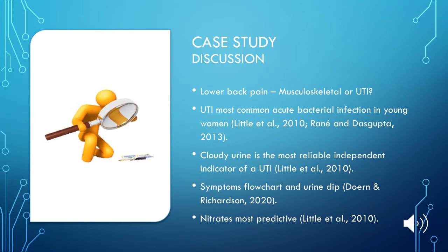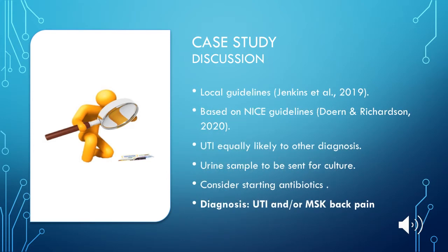The patient's urinalysis showed 3+ leukocytes. When considering urinalysis results, Leta Thal 2010 found that nitrites were the most predictive of a UTI, followed by blood and then leukocytes. Following local guidelines based on NICE guidelines, the patient's diagnosis of UTI was considered equally likely to other diagnoses, and advice was given to send urine for culture and consider starting antibiotics.